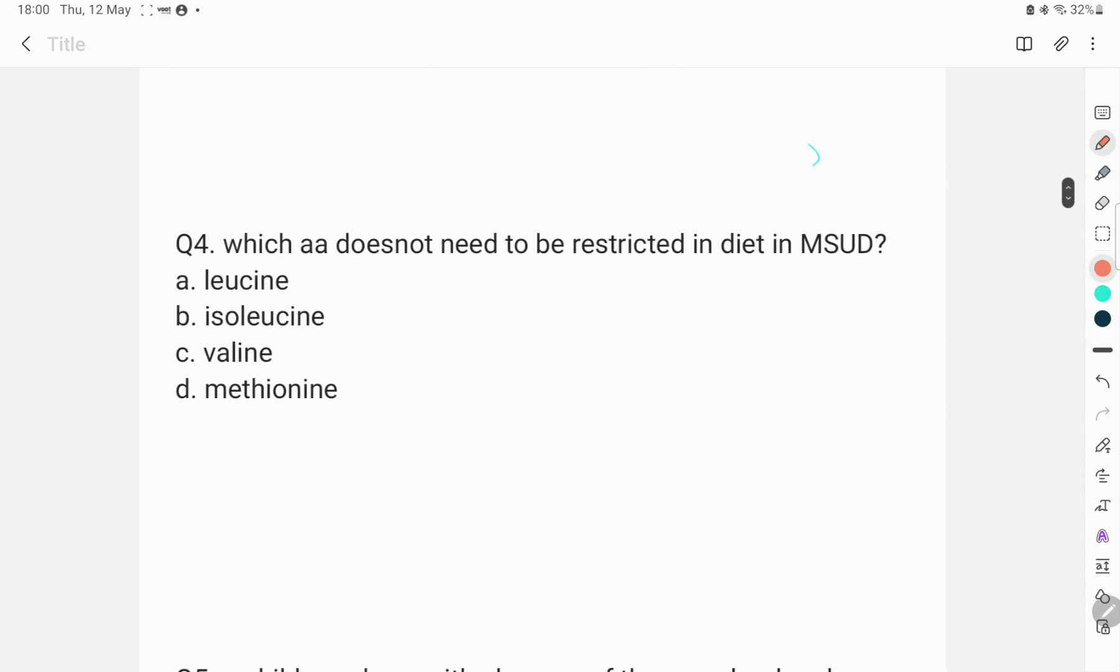The next question was, which amino acid does not need to be restricted in diet in MSUD that is maple syrup urine disease? Even if you don't know what is maple syrup urine disease, you can simply solve this question by the process of elimination. The options are leucine, isoleucine, valine and methionine. You can see that leucine, isoleucine and valine, these are all branched chain amino acids, whereas methionine is not a branched chain amino acid. So, the odd one out here is methionine. And the answer to this question is methionine.